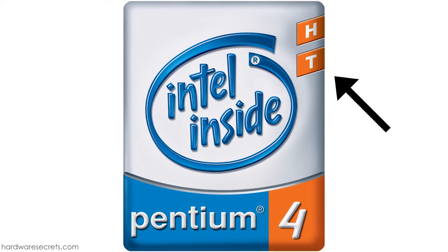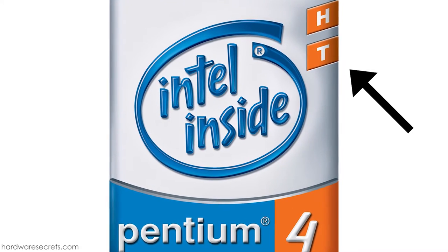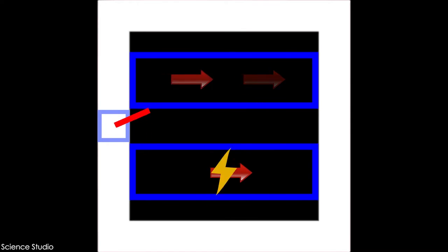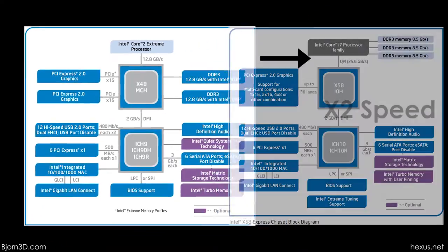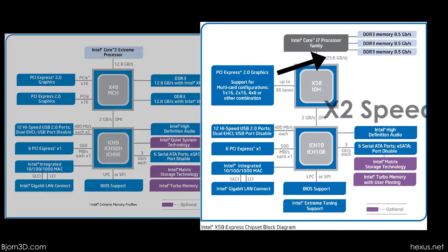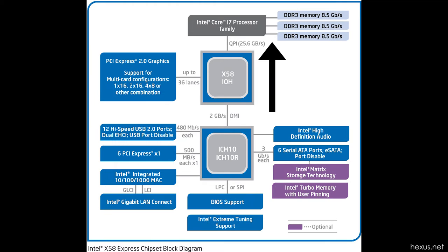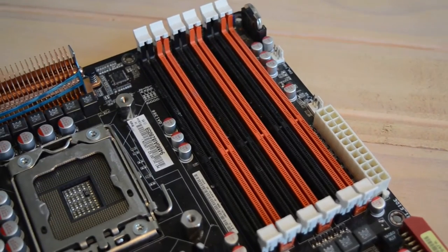Nehalem also brought back hyper-threading from the Pentium 4, which allows multi-threaded applications to more efficiently use the available cores and increase performance. With Nehalem, Intel finally got rid of the ancient and slow front-side bus for communication between the CPU and the rest of the system, replacing it with the much faster QuickPath Interconnect, or QPI for short. LGA1366 featured an on-die triple-channel DDR3 RAM controller, allowing memory speeds and latencies never seen before.